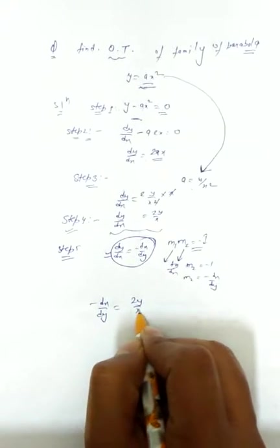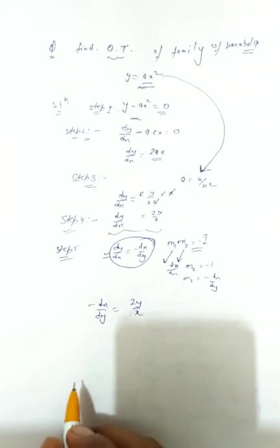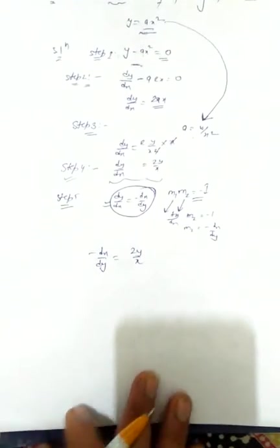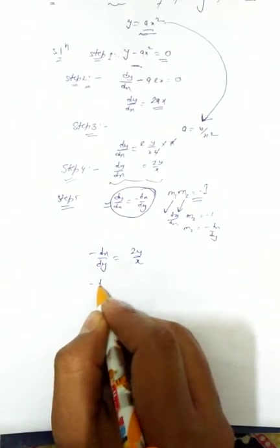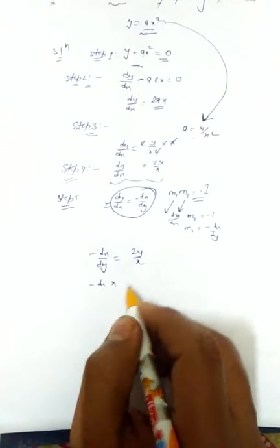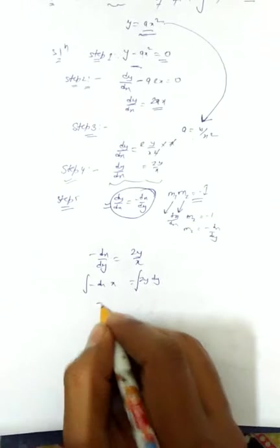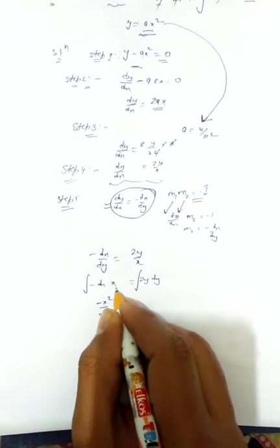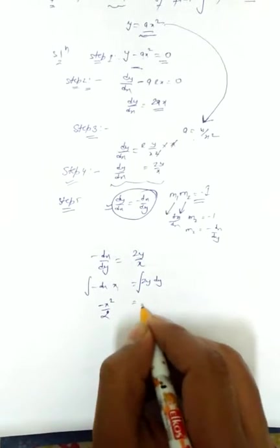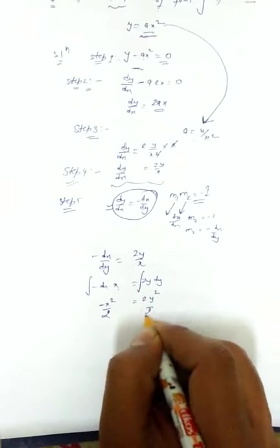Now integrate both sides. This becomes ∫x dx = -2∫y dy. Integrating, we get -x²/2 = 2(y²/2) + c, or -x²/2 = y² + c.